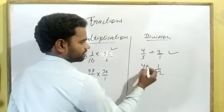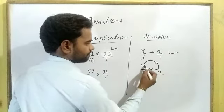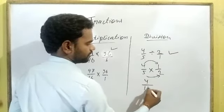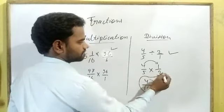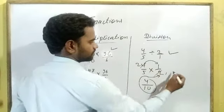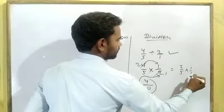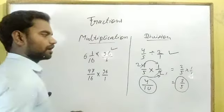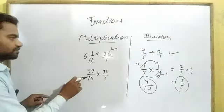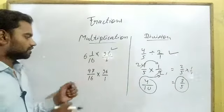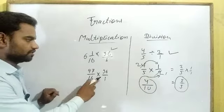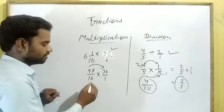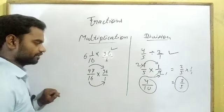To perform the division, the fraction after the division symbol will be changed into its reciprocal form and the division symbol will be changed into multiplication. Now this division is in multiplication form. Simply we can multiply numerator to numerator: 4 × 1 is 4, and 5 × 2 is 10. Or you can cancel — 2 into 1 is 2, 2 into 4. This will be 2 upon 5 into 1 upon 1, so the answer is 2 upon 5. In the first question, this is multiplication only: 97 upon 16 into 36 upon 1. Numerator will be multiplied with numerator, denominator with denominator.